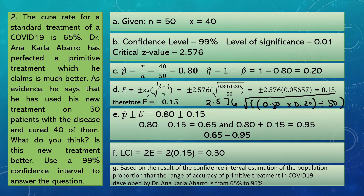For the conclusion: based on the result of the confidence interval estimation, the population proportion for the accuracy of the primitive treatment of COVID-19 developed by Dr. Ana Carla Barro is from 65% to 95%. We can say this new treatment is better since the accuracy is greater than 65%.